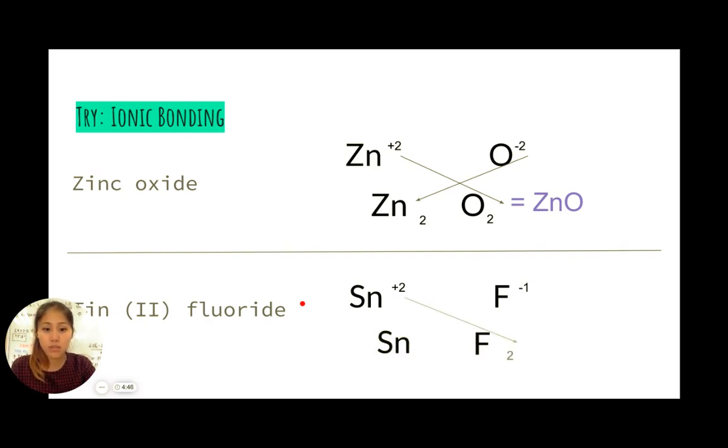Criss-cross, down, see if we need any simplifying. 1 and 2, you can't really simplify, so you end up with SnF subscript 2. And that is your chemical formula for tin(II) fluoride.